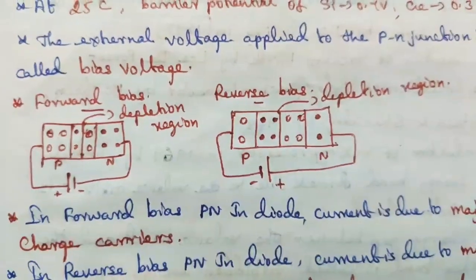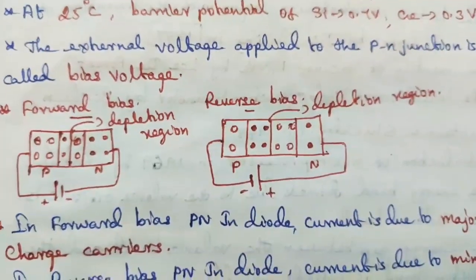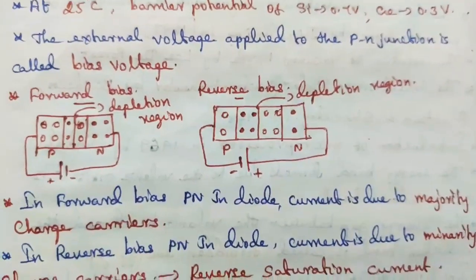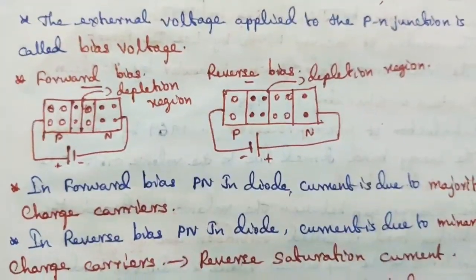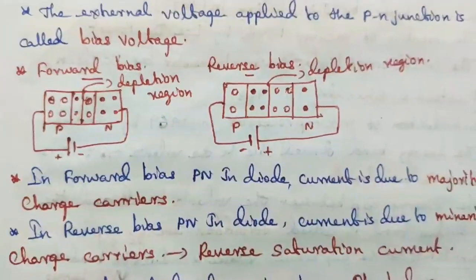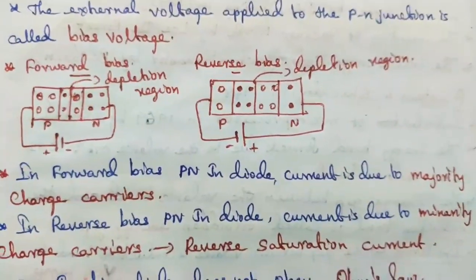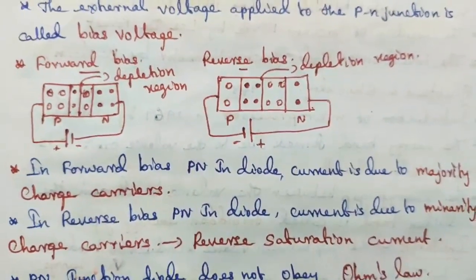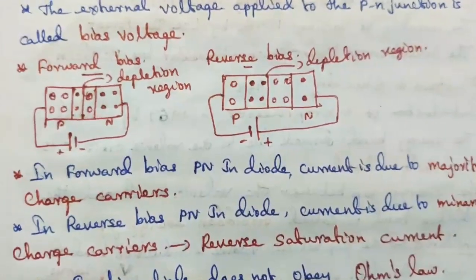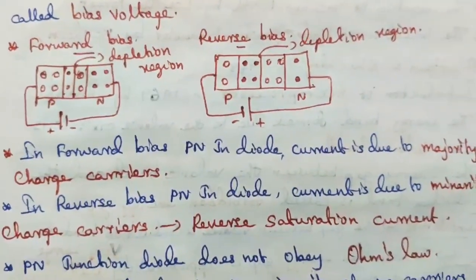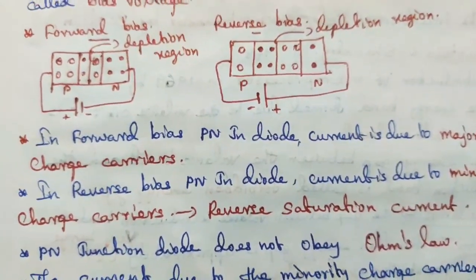In forward bias p-n junction diode, current is due to majority charge carriers. In the case of reverse bias of a p-n junction diode, current is due to only the minority charge carriers. The maximum current is called reverse saturation current, which is produced by the minority charge carriers.